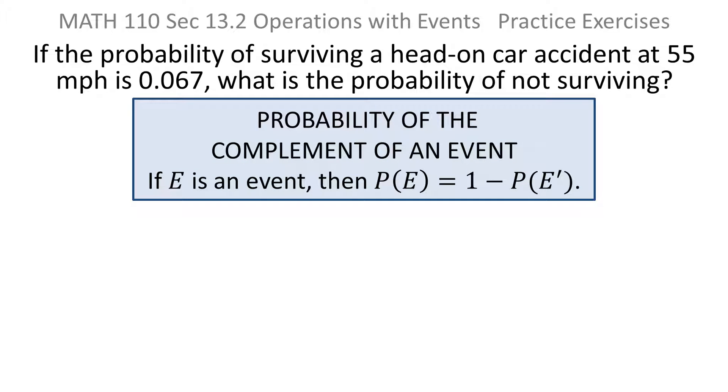Remember, we have the complement rule, which says that if E is an event, then the probability of E is 1 minus the probability of E complement. In other words, the probability that the event occurs is 1 minus the probability that it doesn't occur.